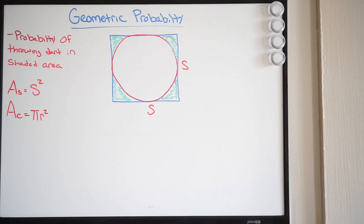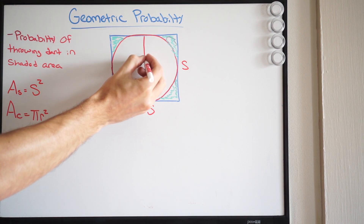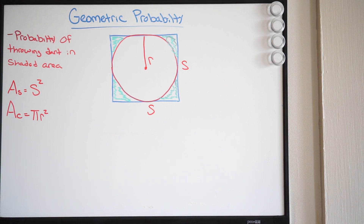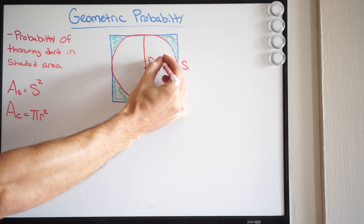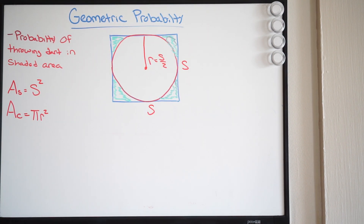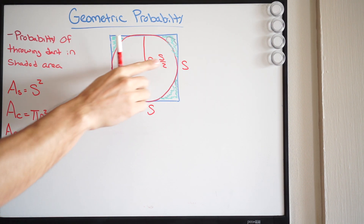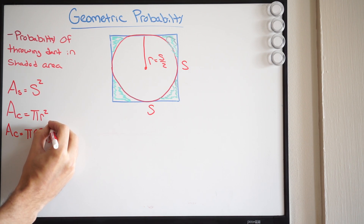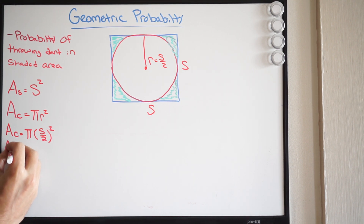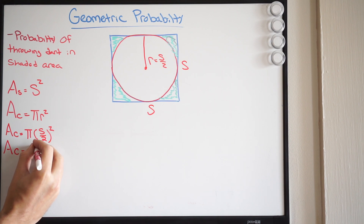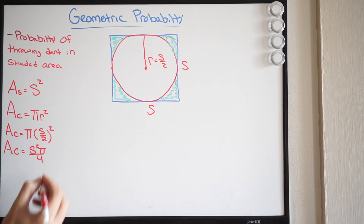When you're dealing with these problems, you want to try to get your variables all the same. I'm dealing with S here and then I have an R, so I want to write that radius in terms of S so that at the end those variables will cancel out. If I have a radius on my circle, I can write this in terms of S — it's going to be S divided by 2, because it's half the side. So we can rewrite the area of the circle as pi times (S over 2) squared, which simplifies to S squared times pi all over 4.